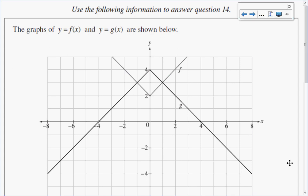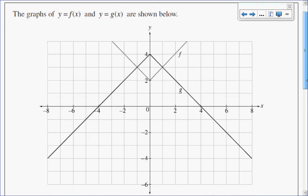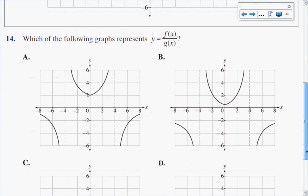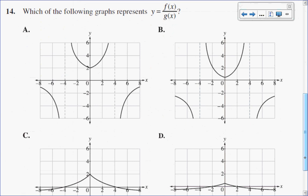In this multiple choice question, I have the graphs of f of x and g of x as shown. What I want to do is know which one of these graphs is going to represent f of x divided by g of x, the rational function.